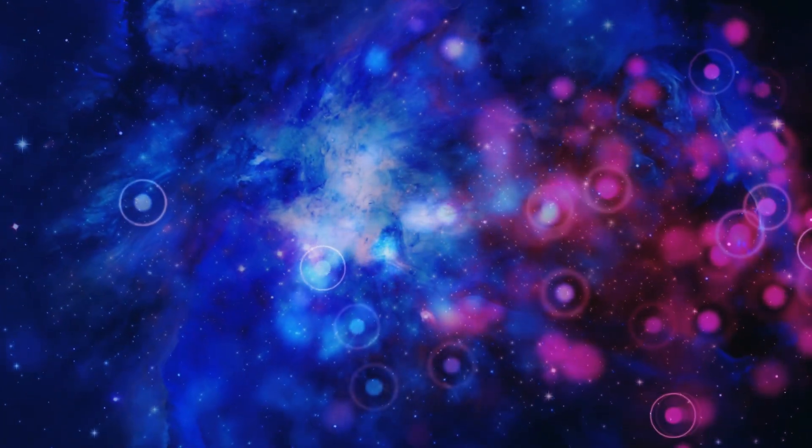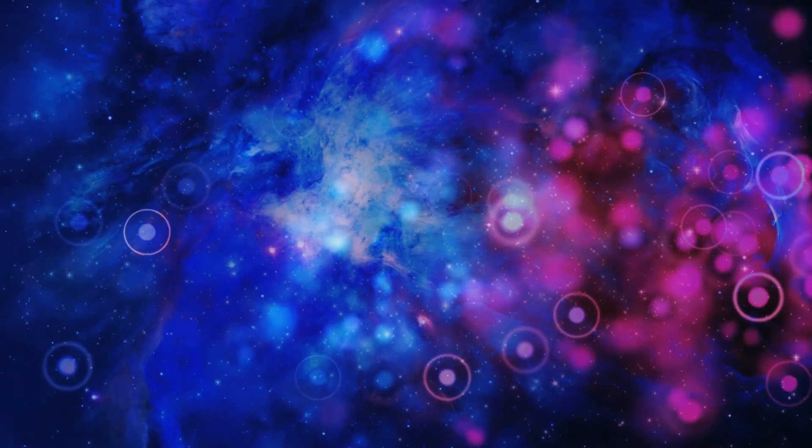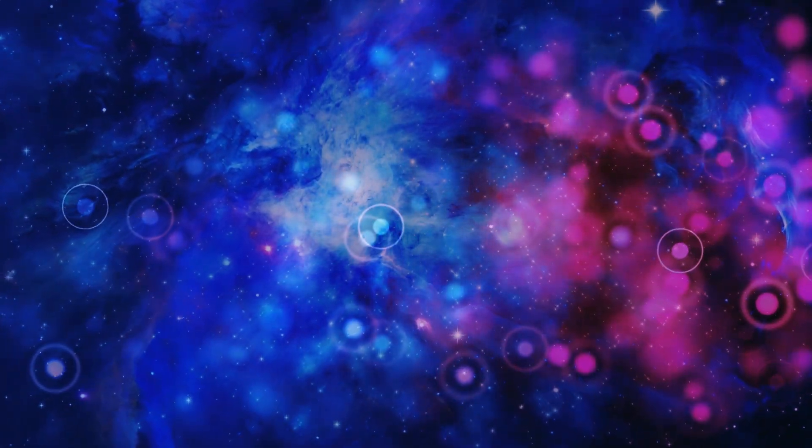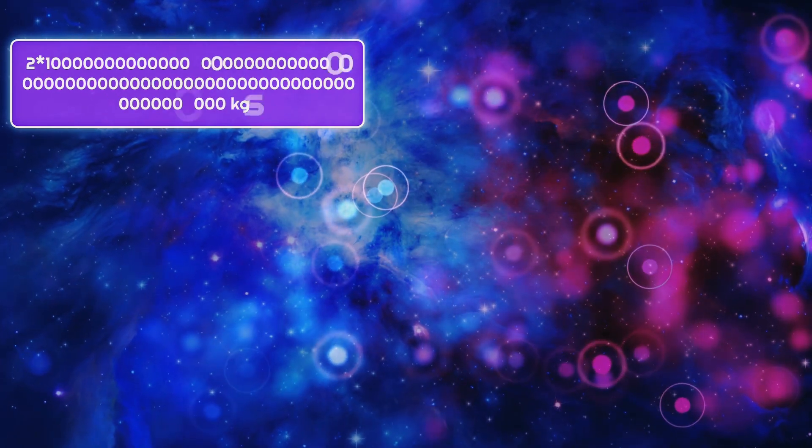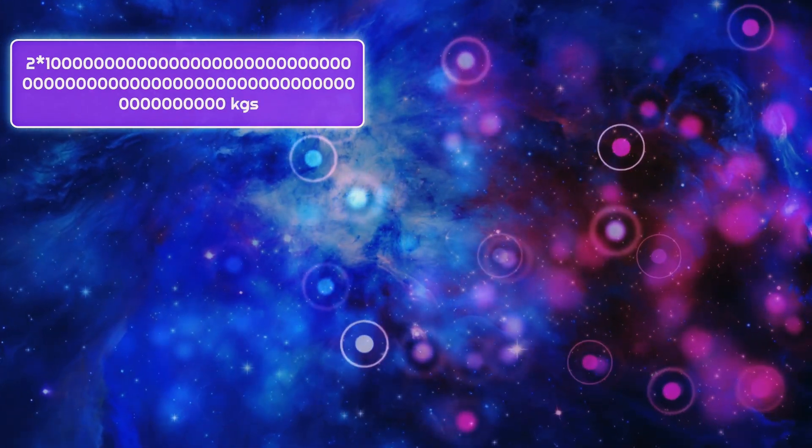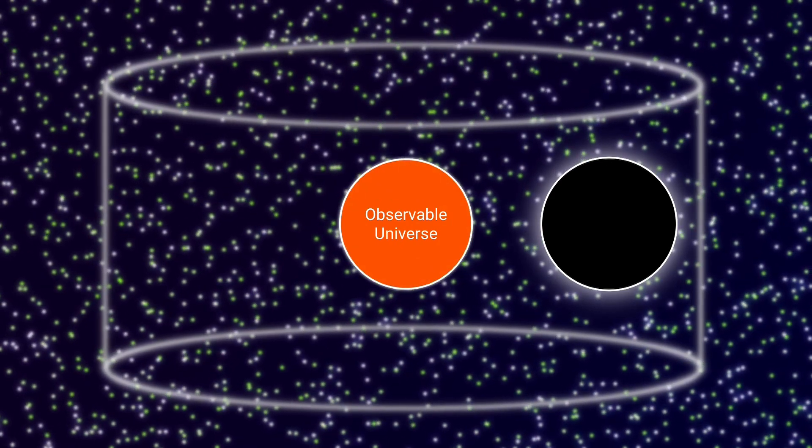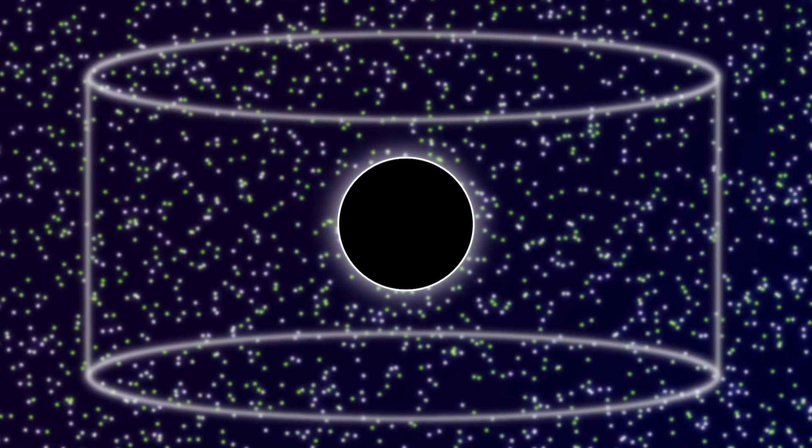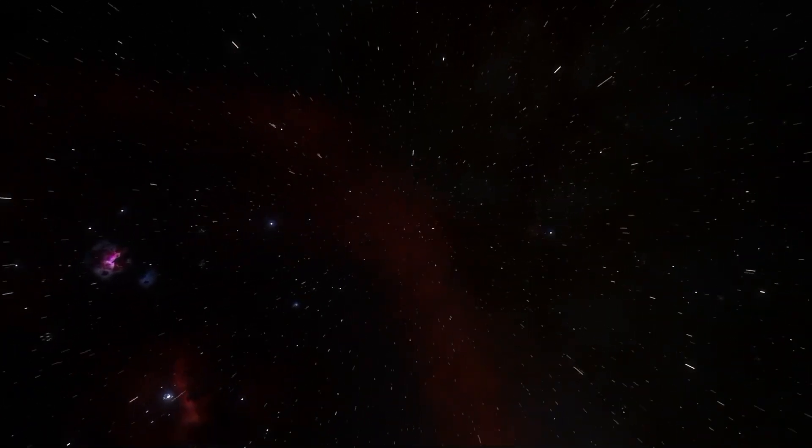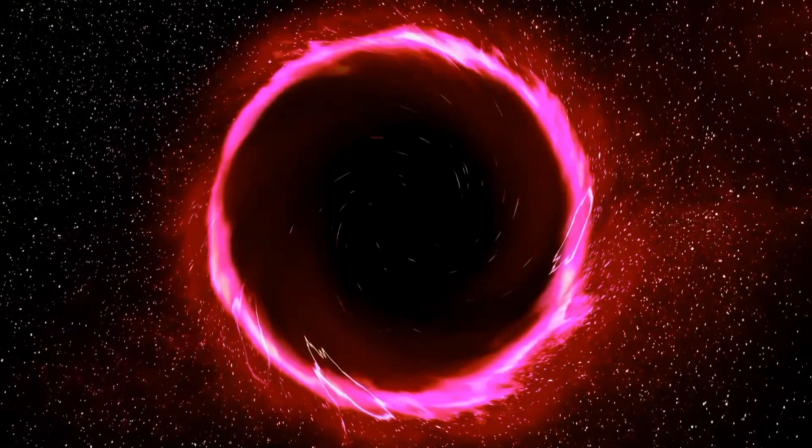If we add all the mass of the observable universe, like protons, neutrons, electrons, fundamental particles, and everything, we get an enormous number. The total estimated mass is 2 into 10 to the power of 53 kilograms. Then the Schwarzschild radius of a black hole with the mass of all the matter is almost exactly equal to the size of the visible universe. This coincidence raises the question of whether our universe might somehow be the interior of a black hole.